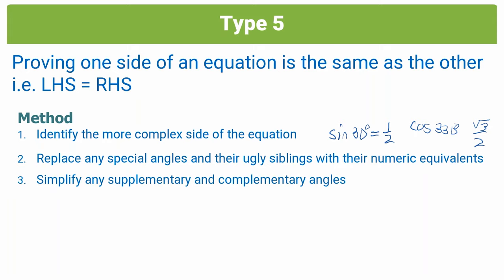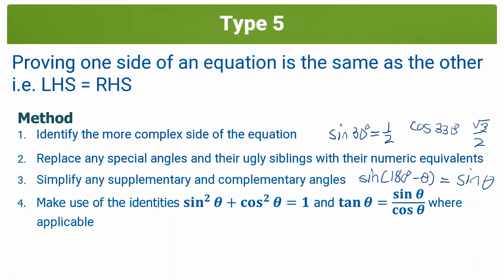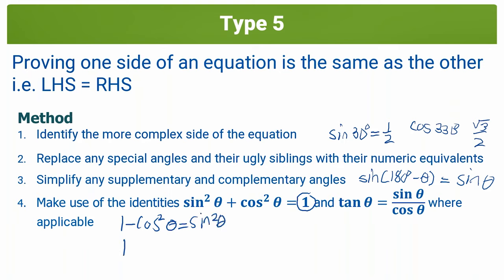Step three: simplify any supplementary and complementary angles. So if in the question you saw sine of 180 degrees minus theta, that's a supplementary reduction formula — immediately replace that with positive sine theta using your rules. Step four: make use of the identities — sine squared theta plus cos squared theta equals 1, that's the Pythagorean identity, and tan theta equals sine theta over cos theta. Remember where you see a 1, you can replace it with sine squared plus cos squared. If you see 1 minus cos squared theta, replace that with sine squared theta, or 1 minus sine squared theta becomes cos squared theta. These reverse ones come out more often. And quite often you'll be replacing tan with sine over cos.